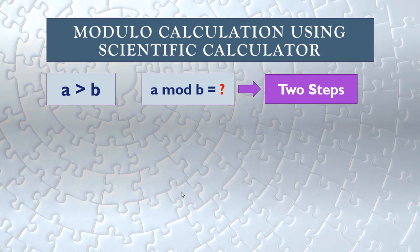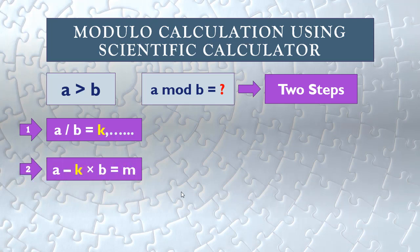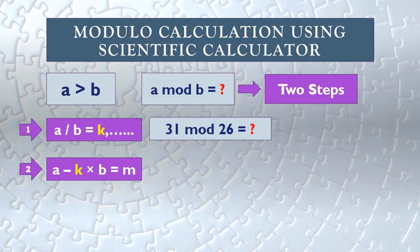In the case where a is greater than b, we calculate a mod b using two steps. The first step: divide a by b to get k with some decimal numbers. In the second step, we take the integer part of k, multiply it by b, and subtract it from a to get our result.